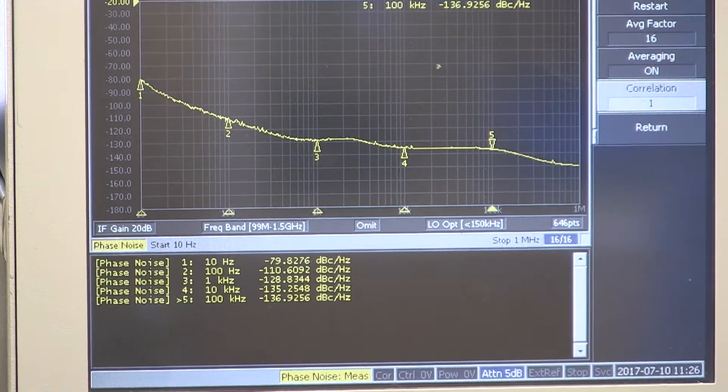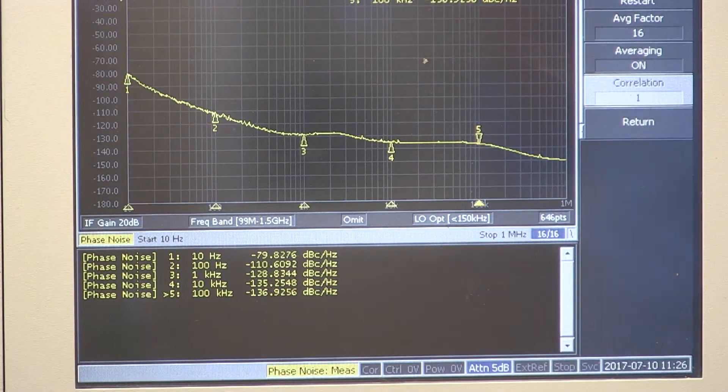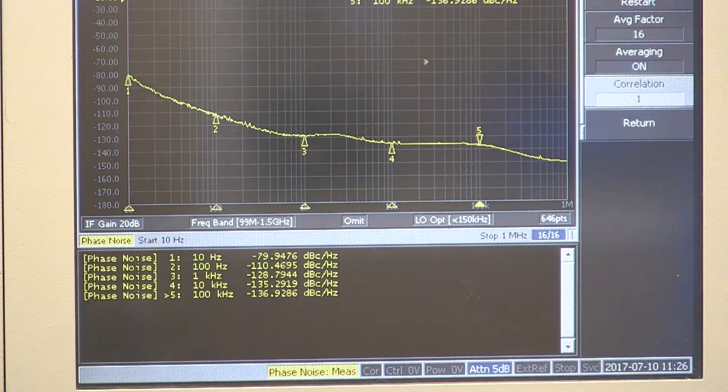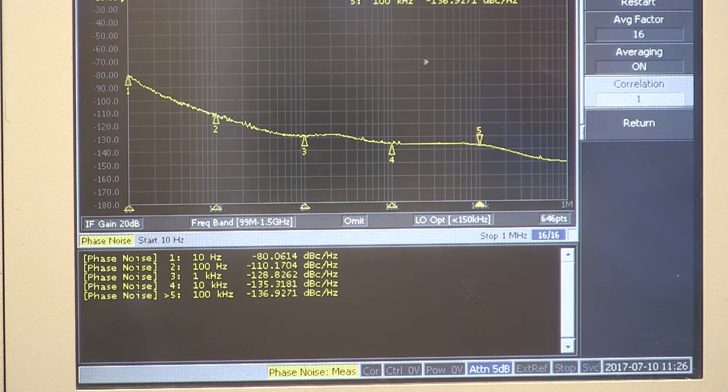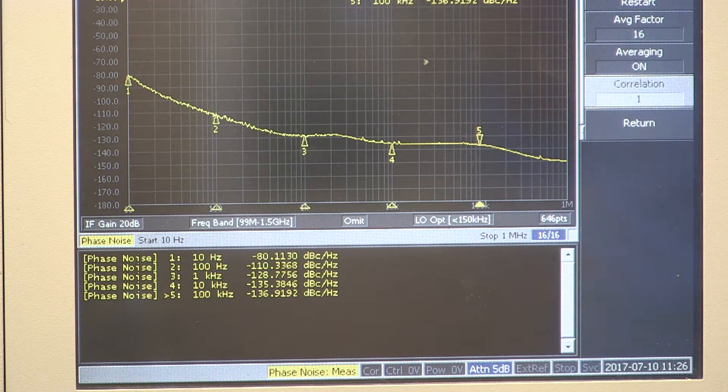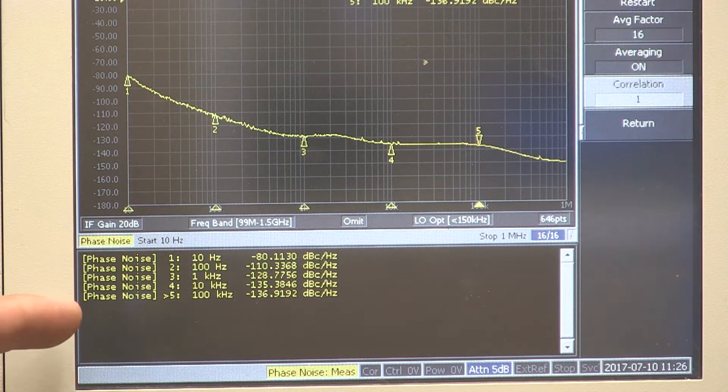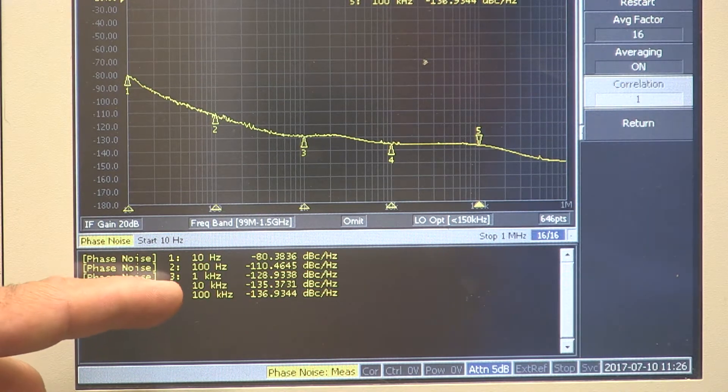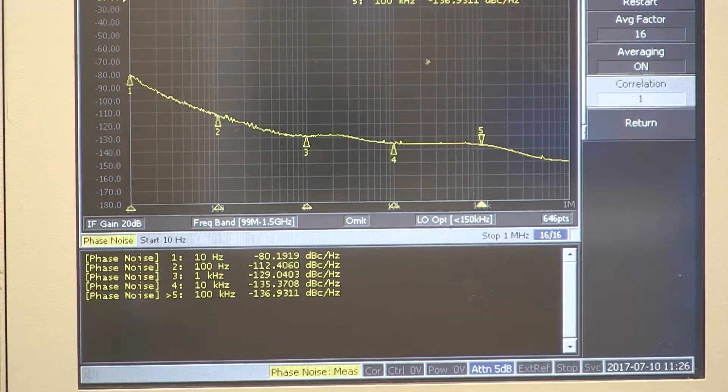At 1 kHz we are 115, we're measuring 128. At 10 kHz we've got to be less than 124 and at 100 kHz also less than 124 dB down. And we're at 135 and 136 accordingly.